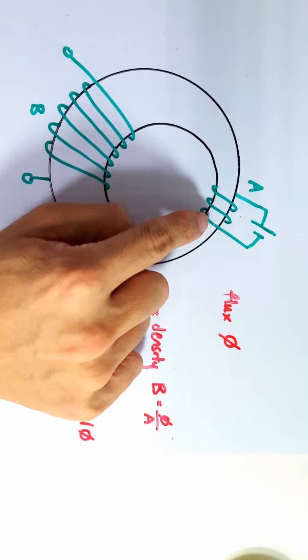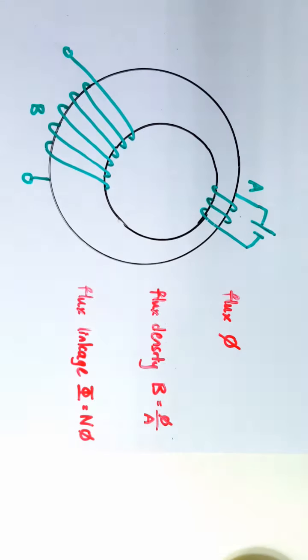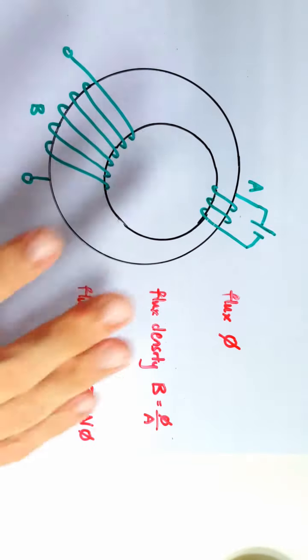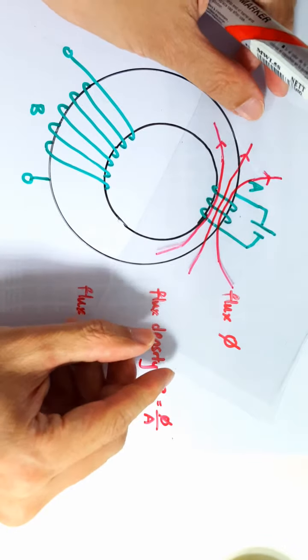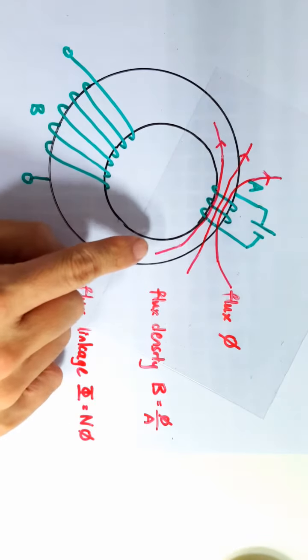Let's start with magnetic flux. There's a solenoid here that's energized by a current. If this iron core is not here, then the magnetic field produced by this coil here would look like this.